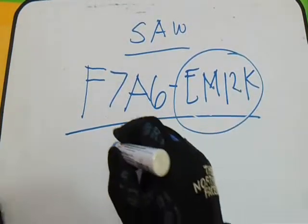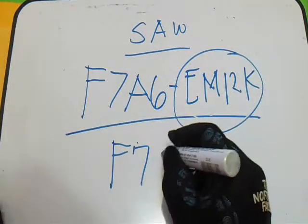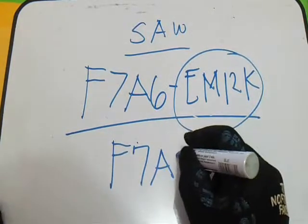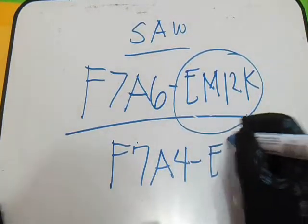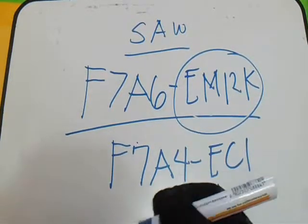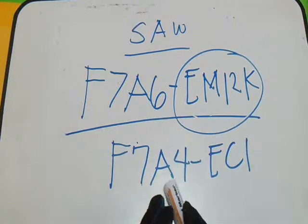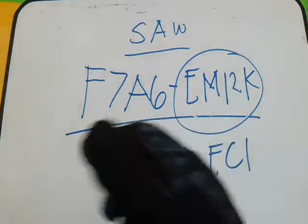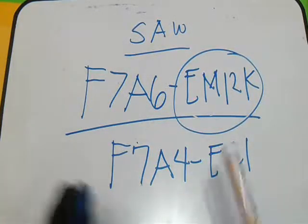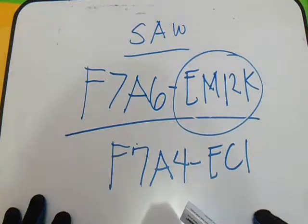We have another example for SAW: F7A4-EC1. F is flux, 7 is tensile strength, A is as-welded, 4 is the lowest temperature, E is solid electrode, and C is composite electrode.